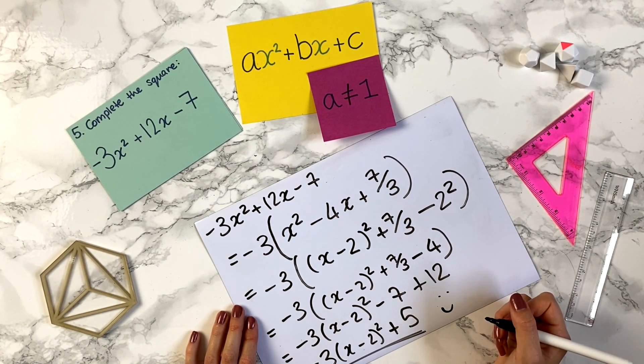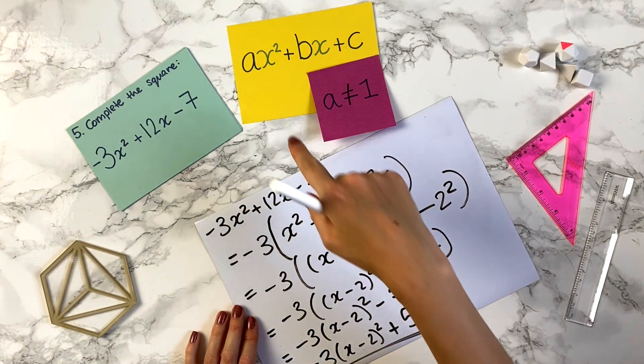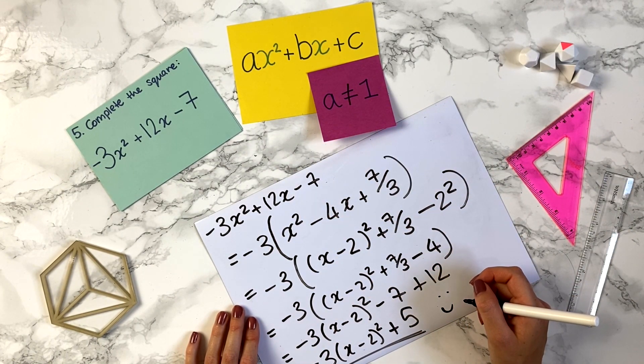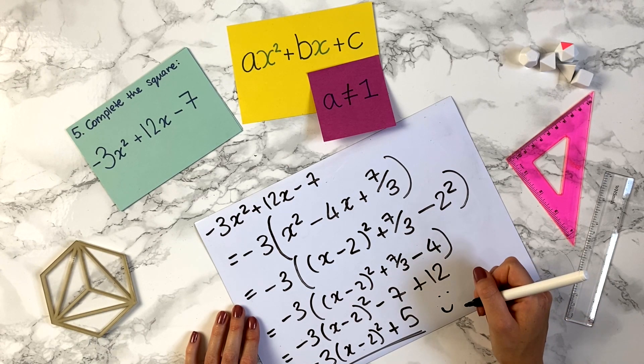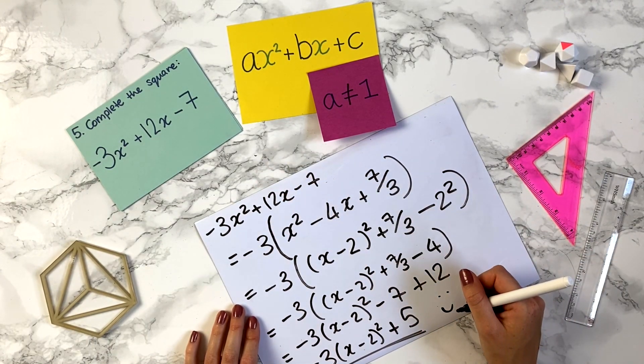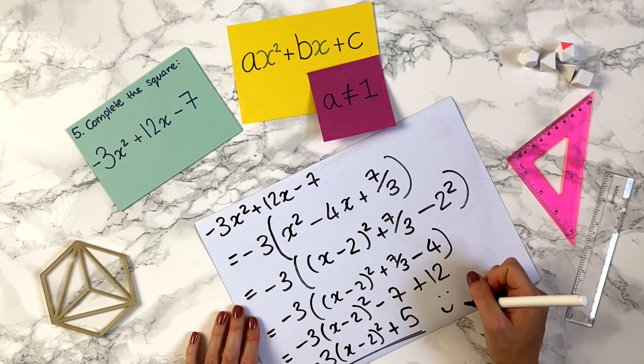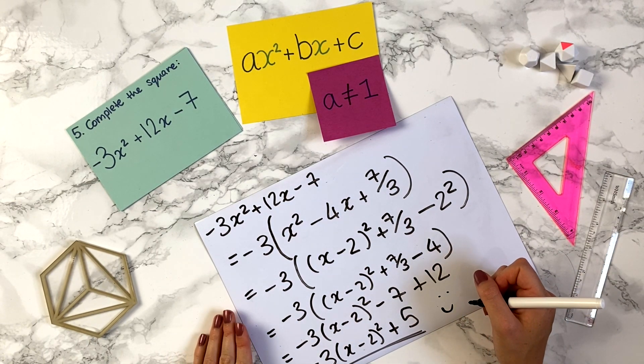Okay so now you know how to complete the square for both the cases where a equals 1 and where a is not 1. Now you can do both of these things I would recommend watching my video on how to solve quadratic equations by completing the square and also how to use this completing the square method to help you with sketching quadratic graphs.